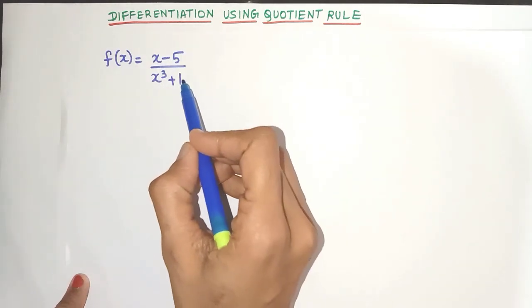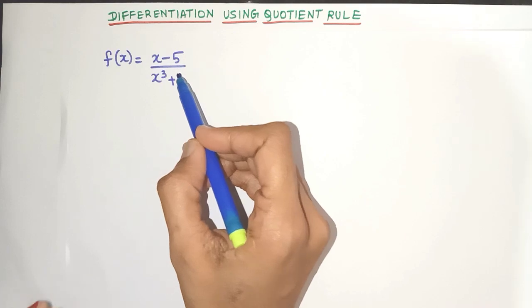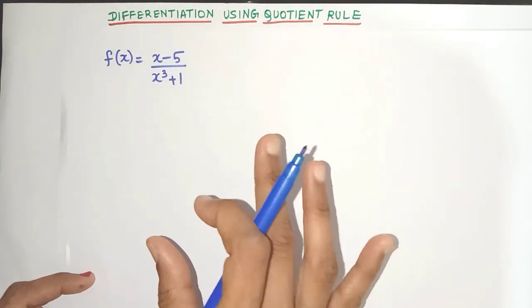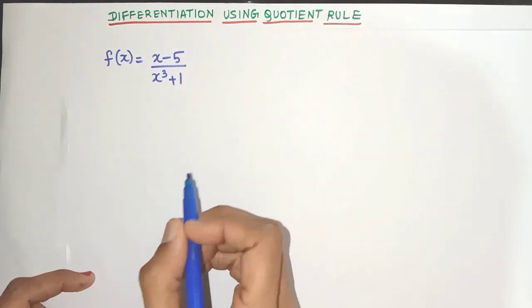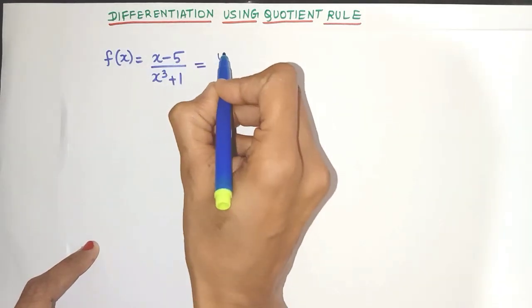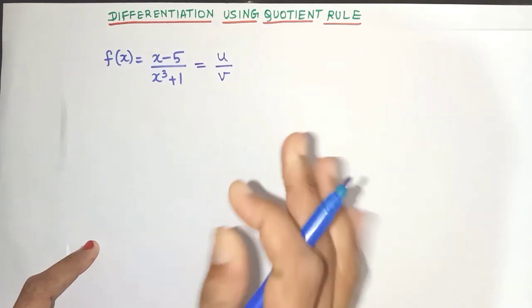These are the numerator and denominator terms. As you can see they are algebraic expressions but we cannot simplify them further and that's why we are going to use the quotient rule here. Now before we use the rule let's denote the numerator by the letter u and the denominator by the letter v.